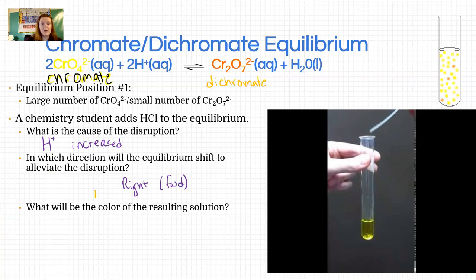That's what we observed. So when the rate forward becomes faster for a bit, that means we're going to make some of the orange stuff, the dichromate. And that's why the solution turns orange. So hopefully you predicted that. But if not, it's okay. Now we're going to do another one.